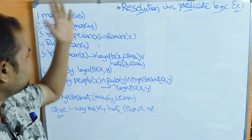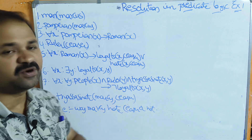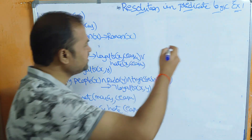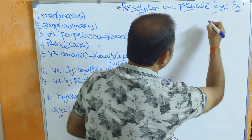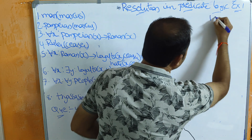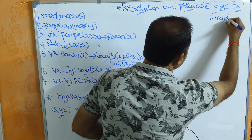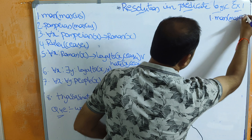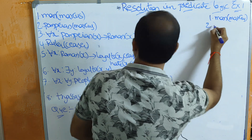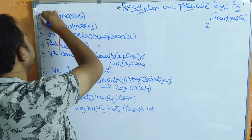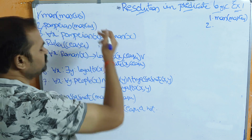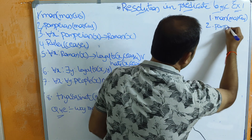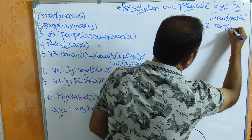The first statement is man(marcus) — there is no change; in clause form the statement is man(marcus) only. The next one is pompeian(marcus) — there is no change; pompeian(marcus) in clause form is pompeian(marcus) only.